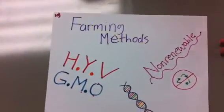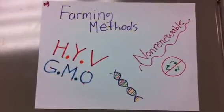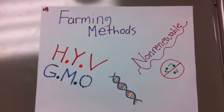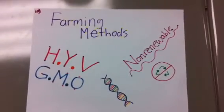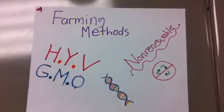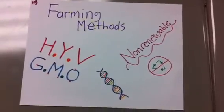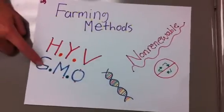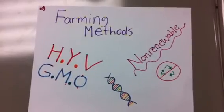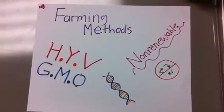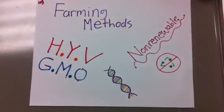Farming methods used during the Green Revolution included the increased use of pesticides, synthetic fertilizers, and improved irrigation techniques. Biotechnology was used to produce high-yielding varieties (HYVs) of plants and other genetically modified organisms (GMOs) to outperform traditional crop varieties by being more weather-tolerant, disease-resistant, and productive.